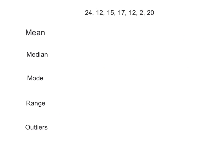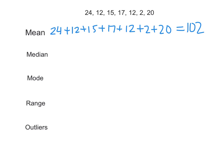So let's take a look at some examples. If you look at this data set, we have 24, 12, 15, 17, 12, 2, and 20. To find the mean, we're going to add all these numbers up: 24 plus 12 plus 15 plus 17 plus 12 plus 2 plus 20. I'll do that on my calculator. I got 102, and I double-checked — it's always good to double-check your calculations and make sure you get the same answer twice. So I got 102 again, so that checks out.